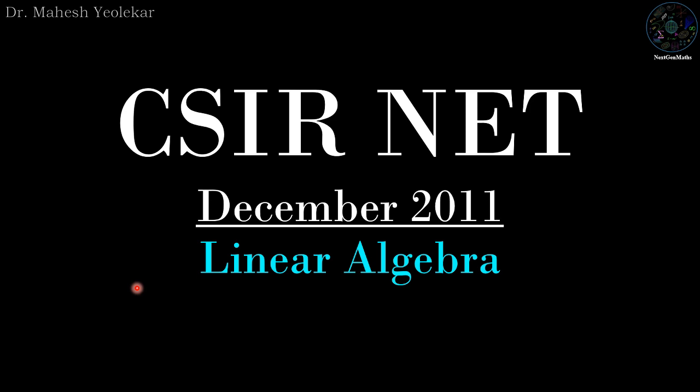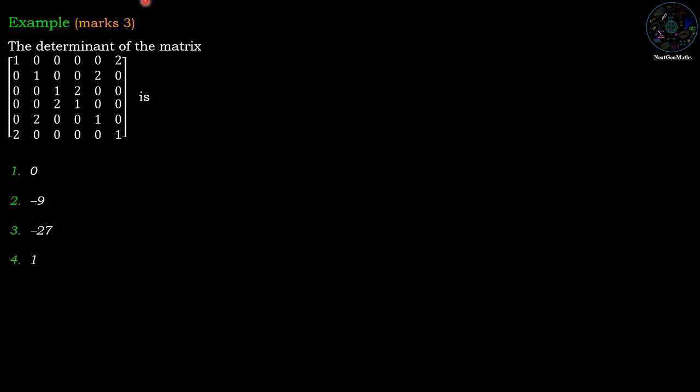Welcome friends. In this video we are going to discuss a problem of linear algebra from CSI exam, December 2011. The determinant of the matrix is - we have four options: 0, minus 9, minus 27, and plus 1.